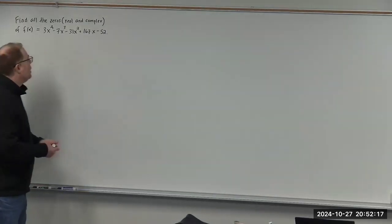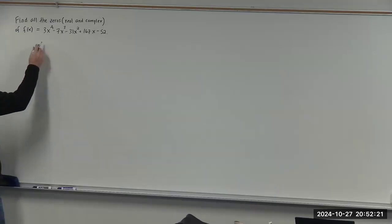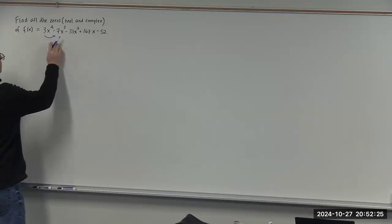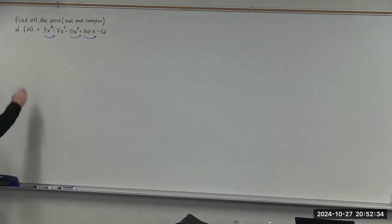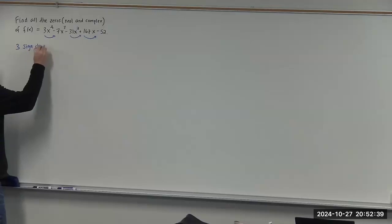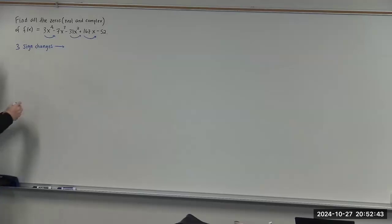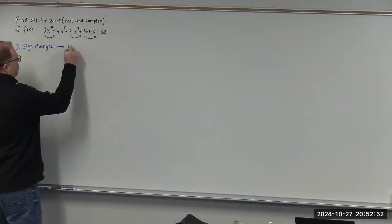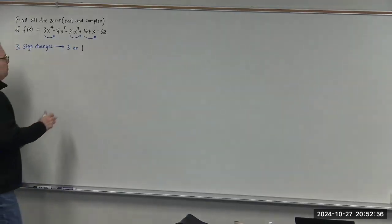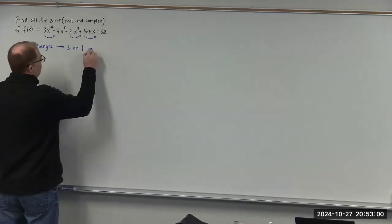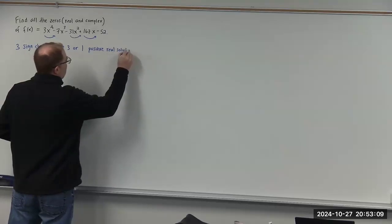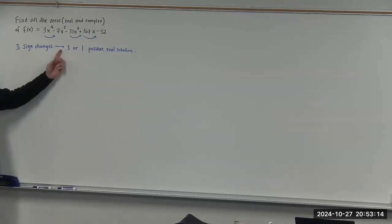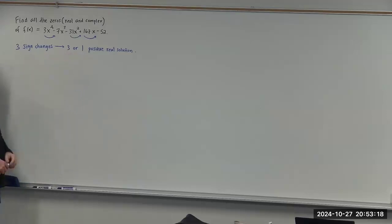To do that, we look at the number of sign changes. The signs go positive, negative, negative, positive, then negative — so there are three sign changes. This implies there are going to be three or one positive real solutions.